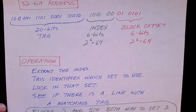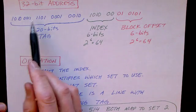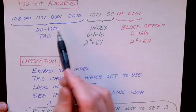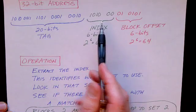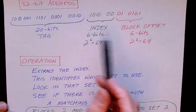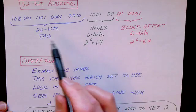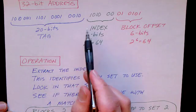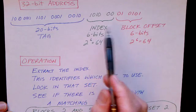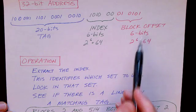Here's how it works. We've got a 32-bit address just as before and we're going to divide it into a tag and an index and the block offset. The tag will now be 20 bits and the index will be six bits. That's the only difference. The block offset will remain at six bits.